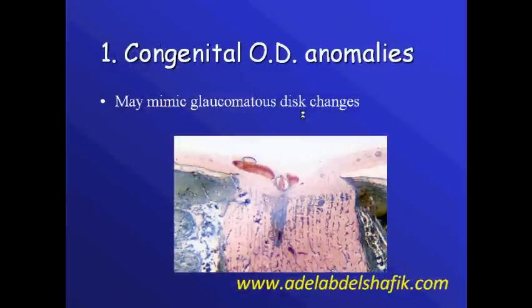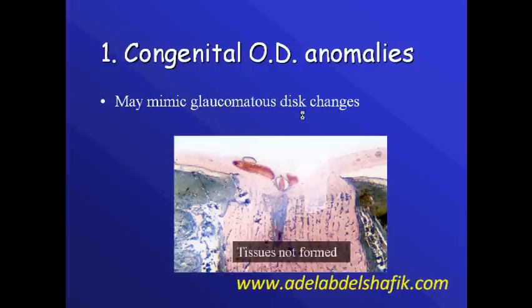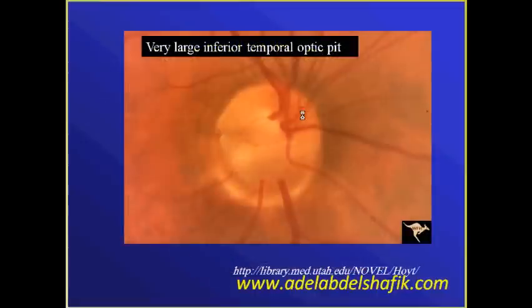We may have congenital optic disc anomalies that may mimic glaucomatous disc changes. In this case, tissues are not formed in the first place. An example is optic pit.